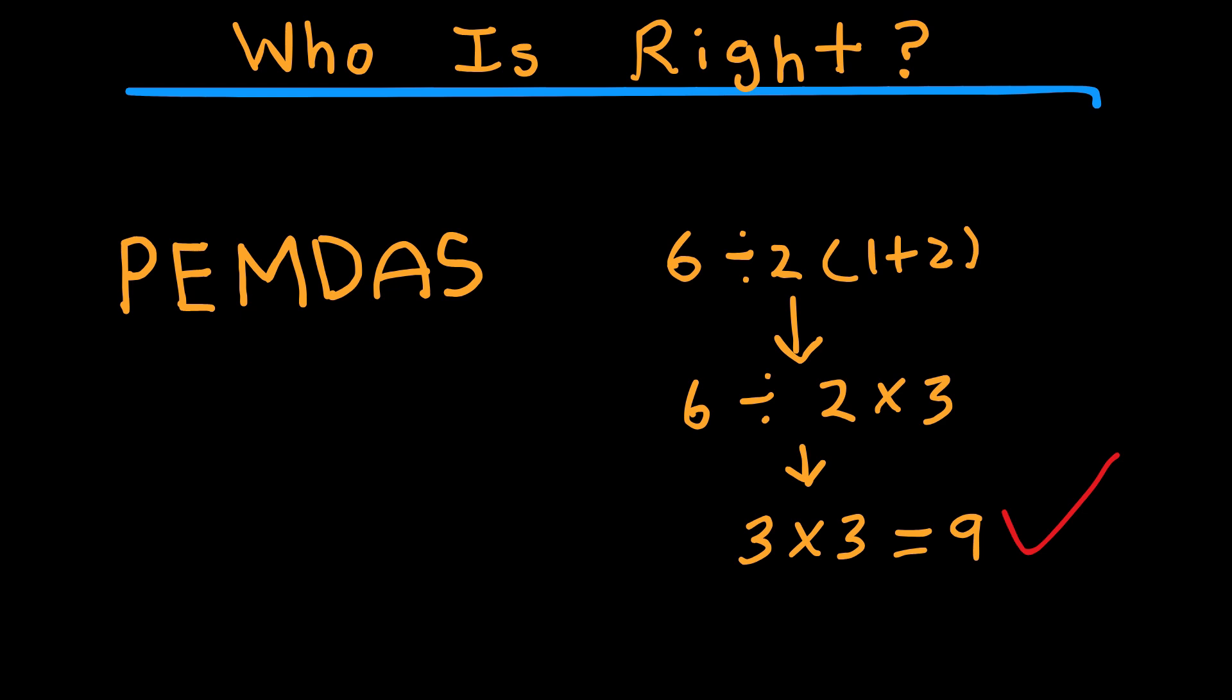But if you interpret 2 parenthesis 3 parenthesis as a grouped operation, you're saying 6 divided brackets 2 parenthesis 3 parenthesis brackets will give you 6 divided by 6 equal 1, which depending on your background might feel more natural. So again, it depends on interpretation.